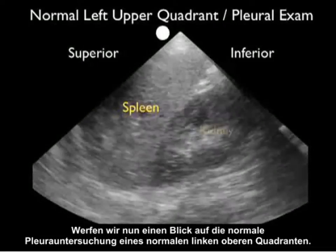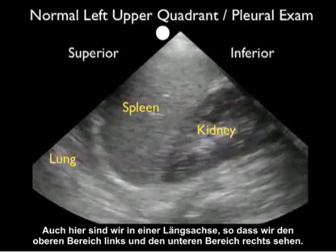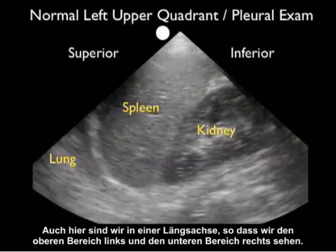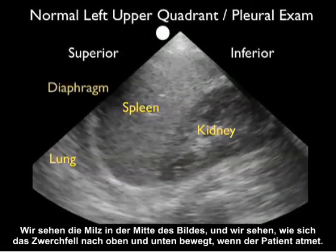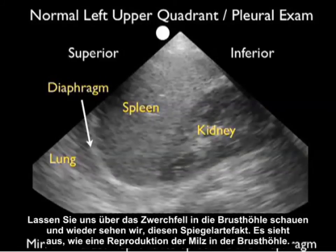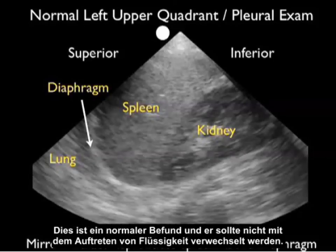Now let's take a look at a normal left upper quadrant pleural exam. Again we're in a long axis configuration, so superior to the left, inferior to the right. We see the spleen in the middle of the image and the diaphragm moving up and down as the patient breathes. Looking above the diaphragm into the thoracic cavity, we again see that mirror artifact — almost like a reproduction of the spleen within the thoracic cavity. This is a normal finding and not to be confused with fluid.